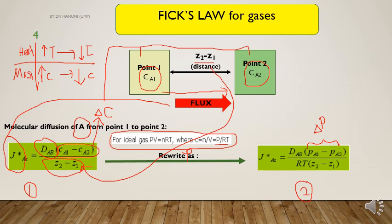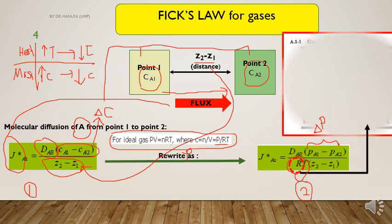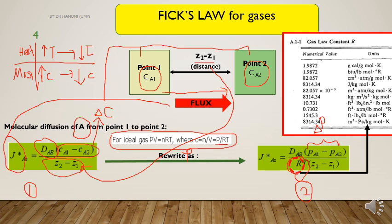If you notice, there is quite a difference between equation 1 and equation 2. In equation 1, we don't have the R and T terms. But in equation 2, we have the R and T terms, where R refers to the gas constant and T refers to temperature. The value of R depends on the units for the flux we want to measure. All values of R at different units are listed in the appendix.